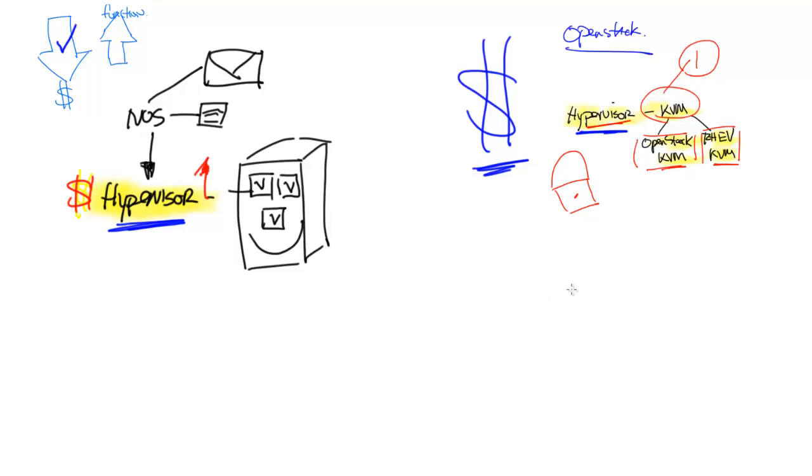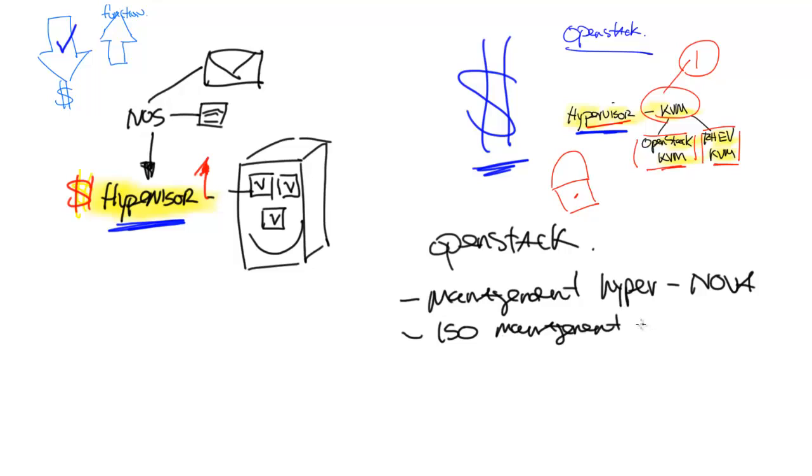So, OpenStack provides a series of applications to perform certain duties within your environment. For example, you have management. So, the management of the virtual environment, or the hypervisor is done by Nova. You have image management, for example, the ISOs. This is things that when you provision, they go up quickly. You can provision that server within a few minutes. Many people use Glance for this.